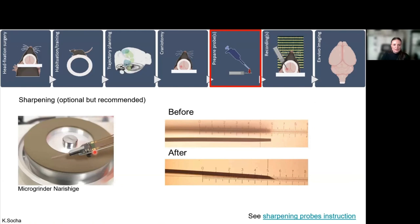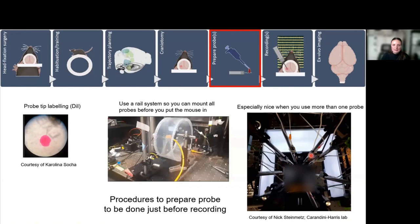Sharpening is also recommended to do. It feels very scary at first, but it's actually not that bad if you start doing it, and it helps a lot with inserting the probes. We use a micro grinder. Here you can see from an image by Karolina that initially it's really kind of blunt, and then after the sharpening process, it has a nice pointy tip.